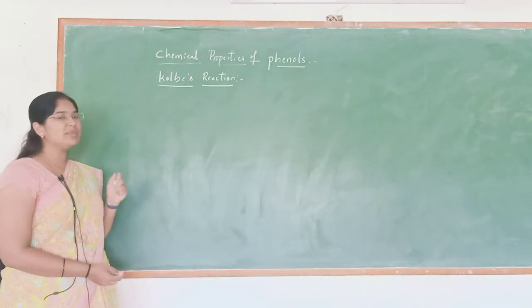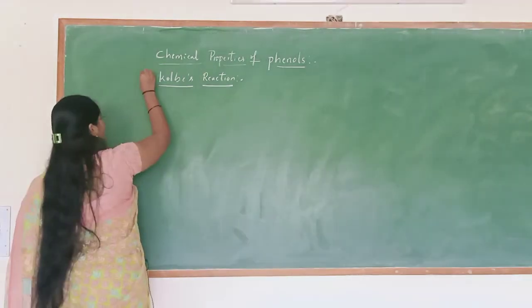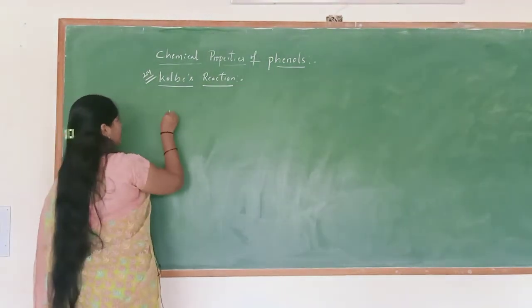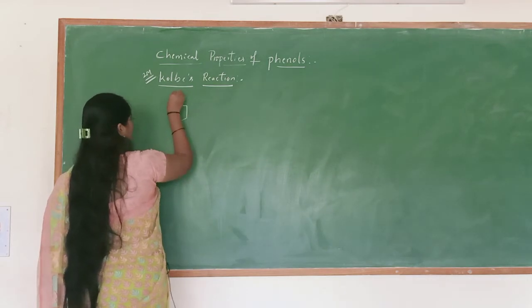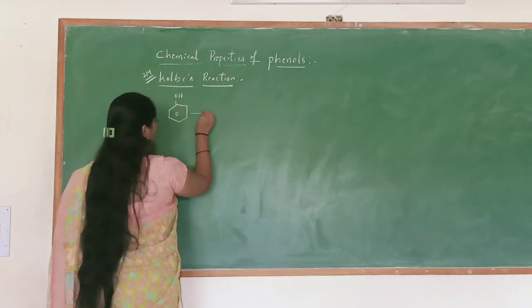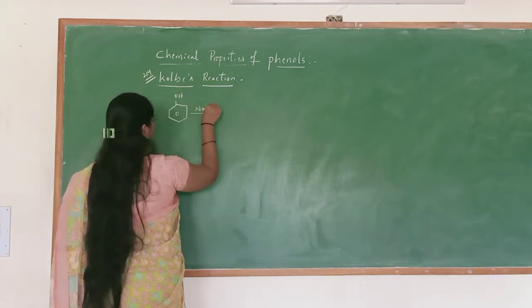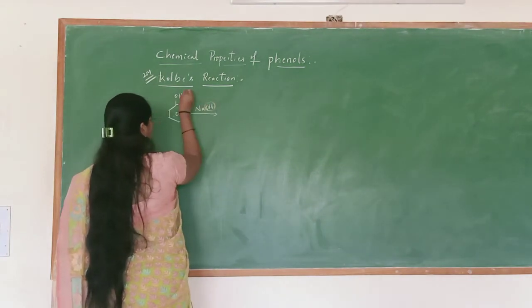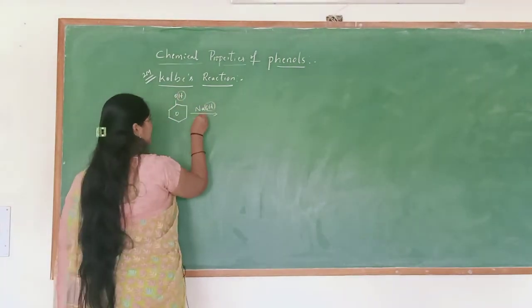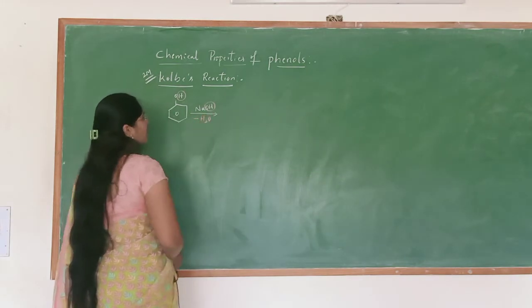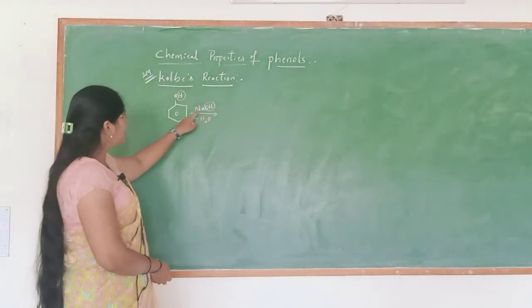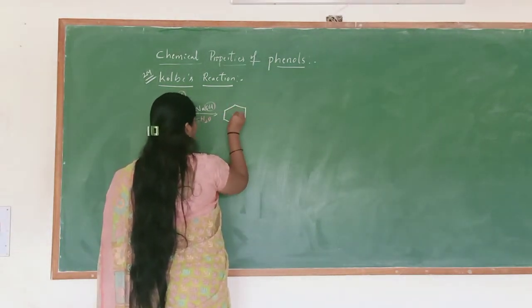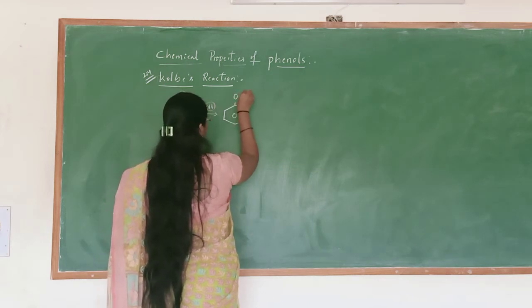Next chemical property of phenol is Kolbe's reaction. This reaction is very important for phenols. In Kolbe's reaction, first phenol is treated with sodium hydroxide, that is NaOH. The OH of NaOH and the hydrogen of phenol together eliminate as H2O. And sodium reacts with oxygen. Then we will get sodium phenoxide.